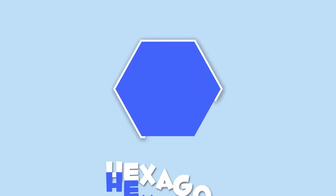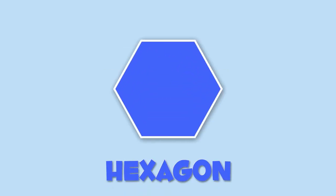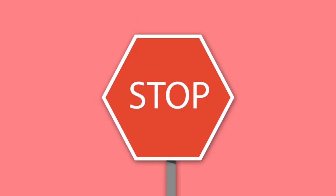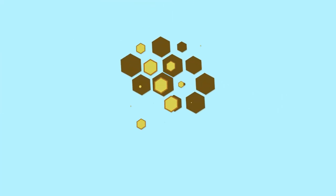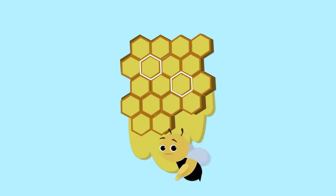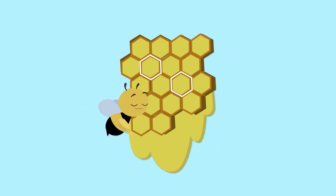Finally, I'll show you the hexagon. Hexagons have six sides. A hexagon is like this stop sign, or like this beehive. We better go now — bees are getting angry!